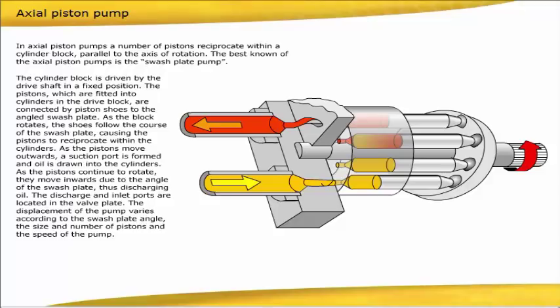As the pistons move outwards, a suction port is formed, and oil is drawn into the cylinders. As the pistons continue to rotate, they move inwards due to the angle of the swashplate, thus discharging oil. The discharge and inlet ports are located in the valve plate. The displacement of the pump varies according to the swashplate angle, the size and number of pistons, and the speed of the pump.